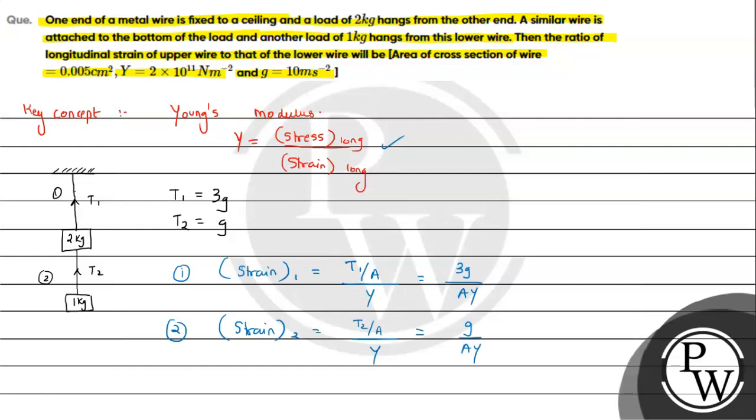We have to find the ratio of upper to lower. Therefore, we can say longitudinal strain of upper wire upon longitudinal strain of lower wire will be 3. So this is the answer to the question. I hope you understood the solution. All the best. Thank you.